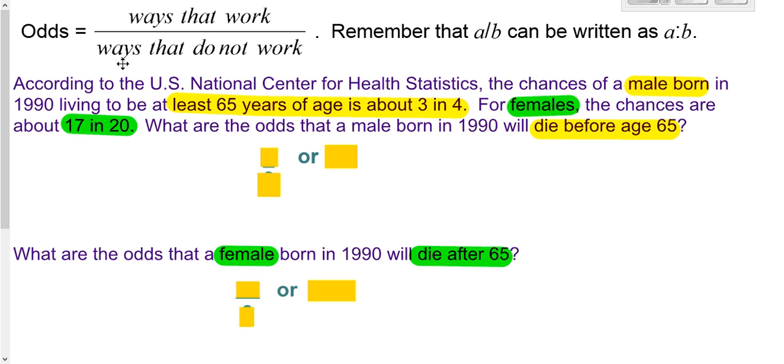We also have odds. Odds are somewhat similar to probability. Both have the top being ways that work for you. Now probability is out of total ways that could work. Odds is out of those ways that don't work for you.